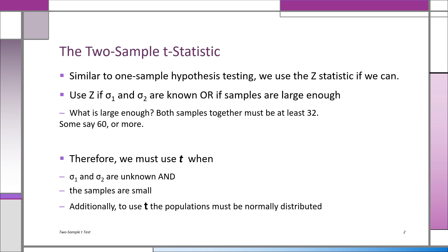When do we use z and when do we use t? The rules are exactly the same as what we learned in one-sample statistical inference, making inferences using one sample from one population. If you want to review, go back to that lecture — probably the one-sample t-statistic lecture using the t-test. Basically, to summarize: if you know sigma from the two groups, sigma1 and sigma2, you have no problem — just use the z.